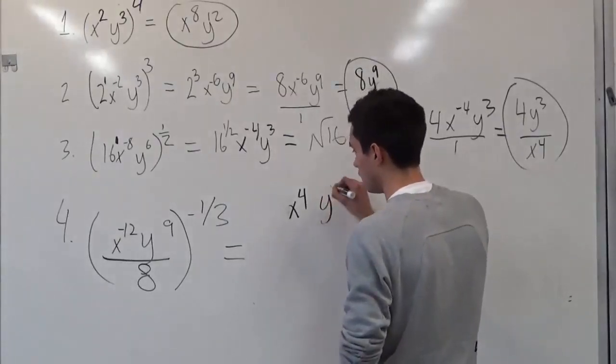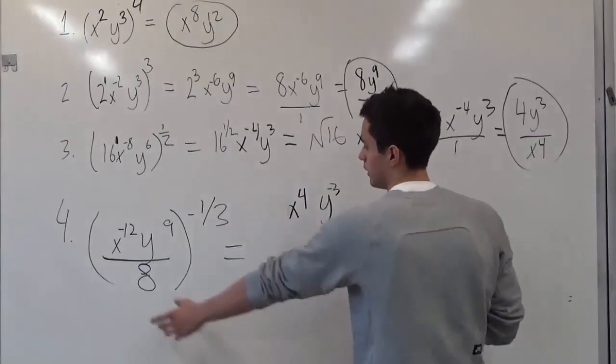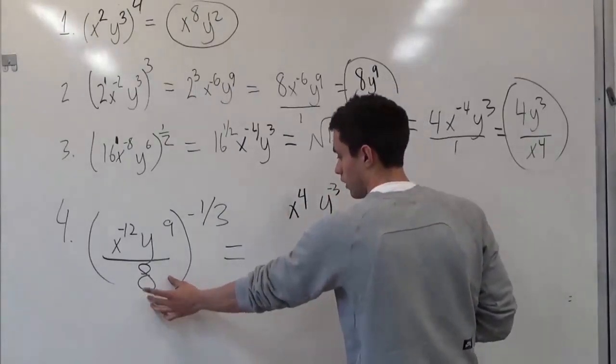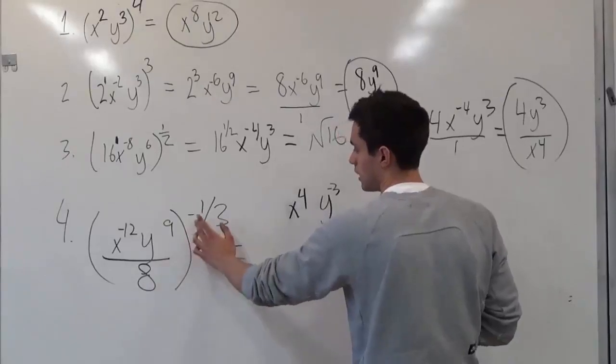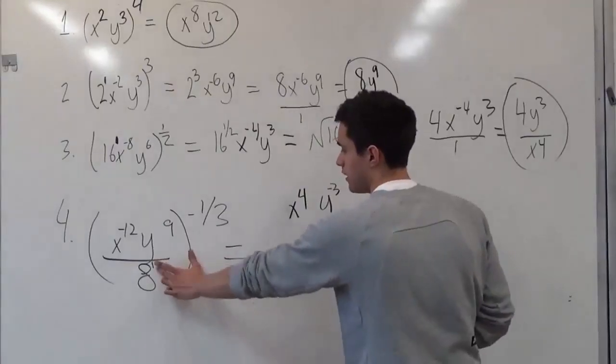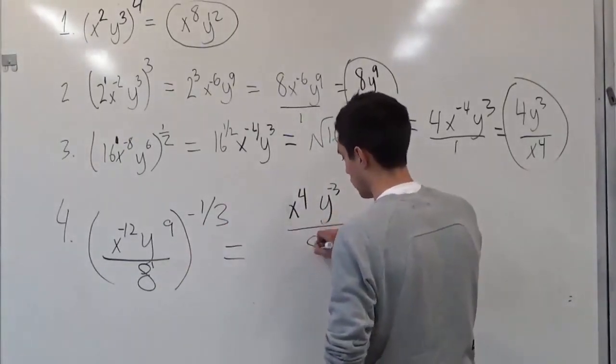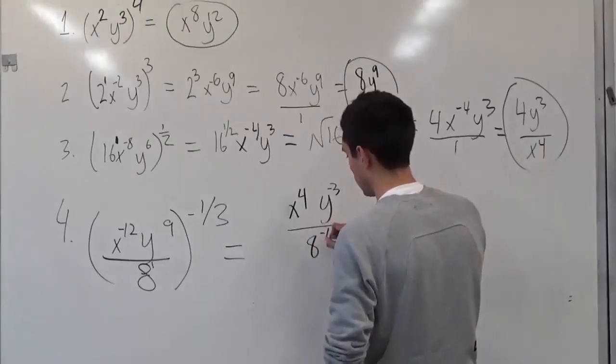So in terms, you would have y to the negative 3. So here we see the whole number 8 times, so let's pretend this has an imaginary 1. So 1 times negative 1 third will give us 1 third. So 8 is negative 1 over 3.